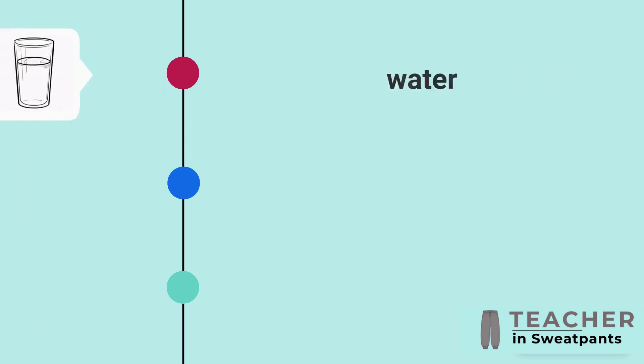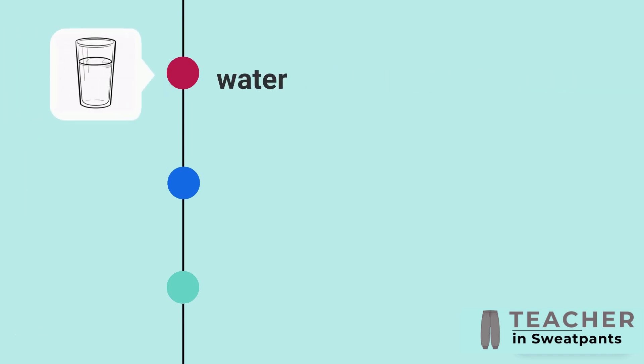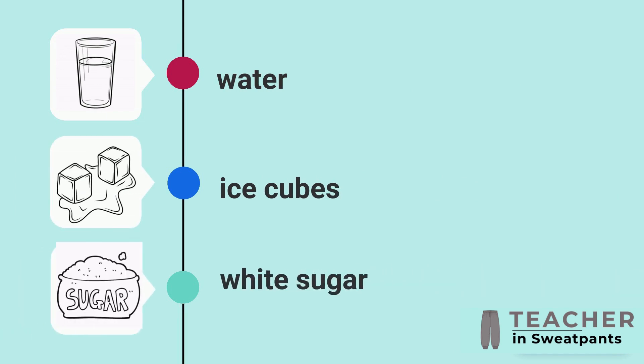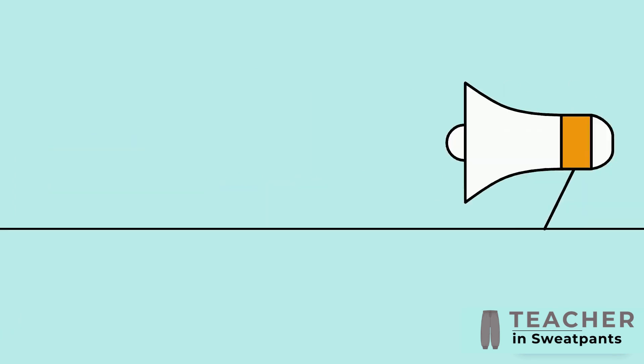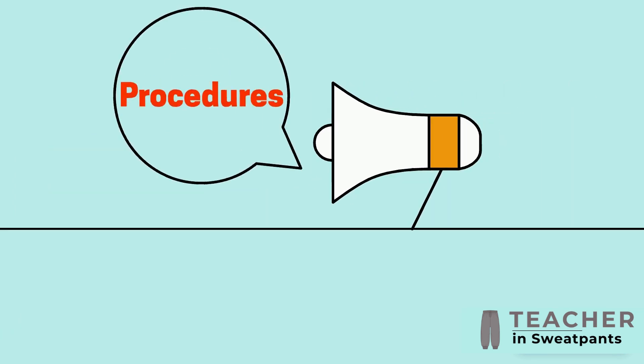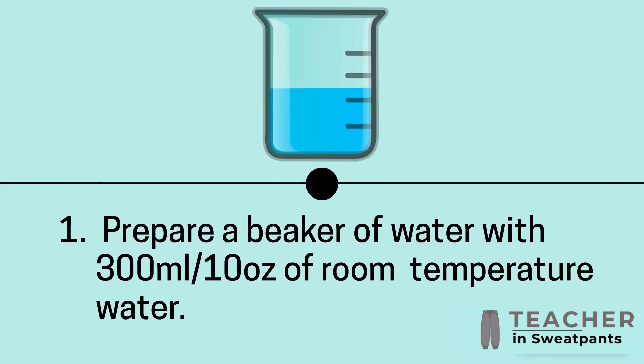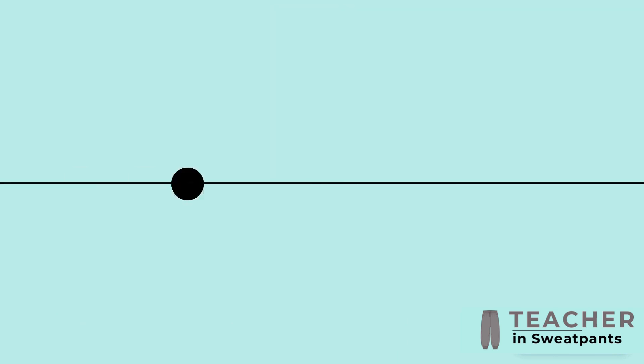Additional materials: kettle, water, ice cubes, and white sugar. Procedures: Step 1 — prepare a beaker of water with 300 milliliters or 10 ounces of room temperature water.